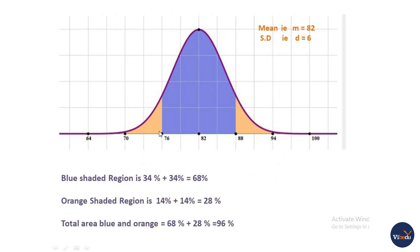Next one. So from 76 to 88, that is 34 plus 34 which is 68%, the blue shaded region. Next, orange shaded region is 14% on this side and 14% on that side, so 14 plus 14 is 28%, only the orange shaded region.